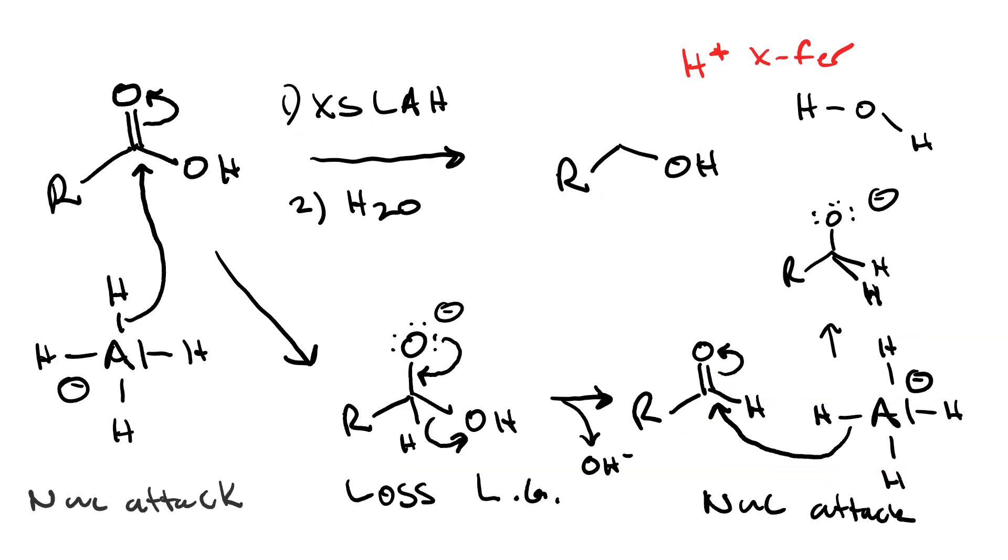Our final step is proton transfer, where the alkoxide that we generated in the second nucleophilic attack step acts as a base, takes a proton from our water, and we get our final alcohol. And we should note that on the alpha carbon, we added both of these hydrogens. Those are the ones that were added by the aluminum hydride. So we added two hydrogen atoms. That's why we needed two hydrides.